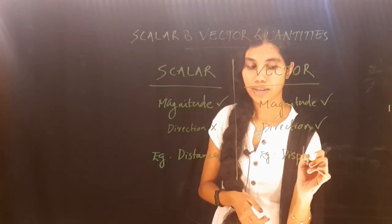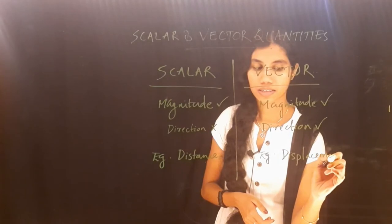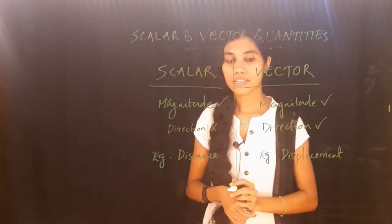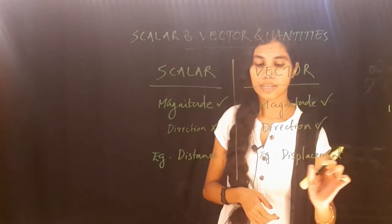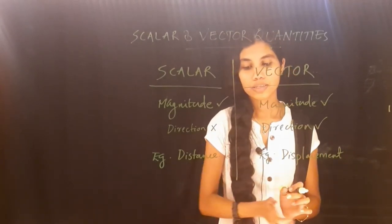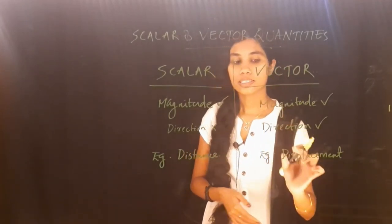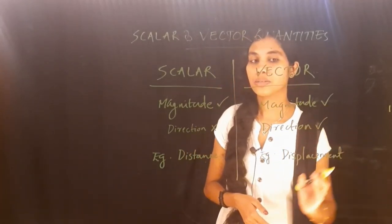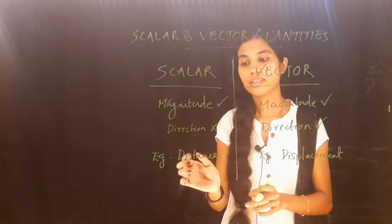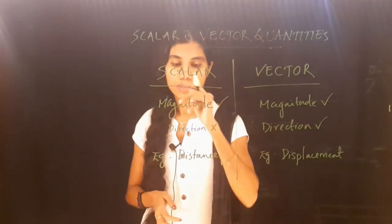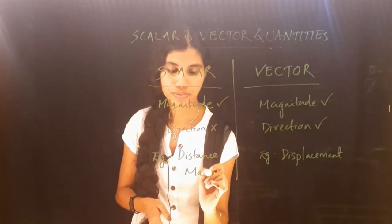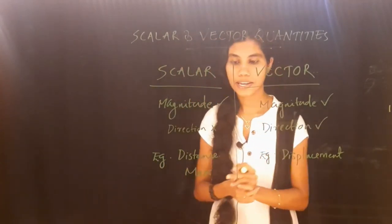What is displacement? Displacement requires both magnitude and direction. The displacement is 200 kilometers north — so we specify both the magnitude and the direction. That is why displacement is a vector quantity.